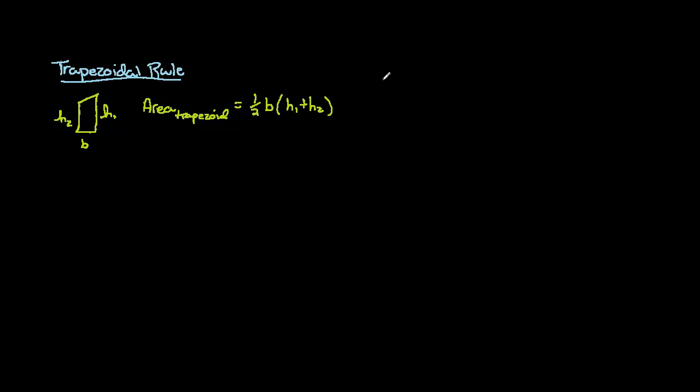Now, when we want to approximate the area under a curve, say for a given function like f of x equals the square root of x, and let's say we're interested in approximating the area under this curve as x goes from 1 to 3, and we will use two partitions in this particular example.